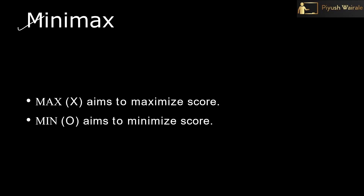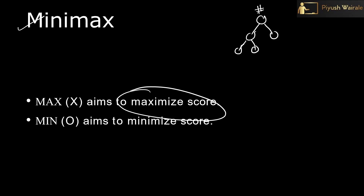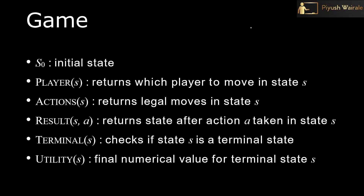Max aims to maximize its score and min aims to minimize the score. For example, we have a tree. At one level it is X player's move, the next level is O player's move, and so on. Max player will know: if I go by this branch, my chances of winning are zero; if I go by this branch, my chances are one. So max will select the maximum value — and go on that branch.